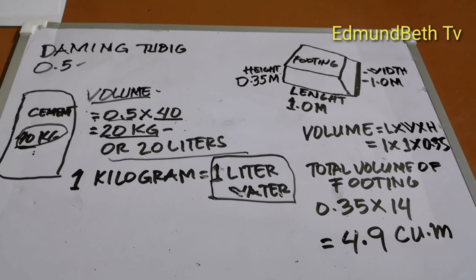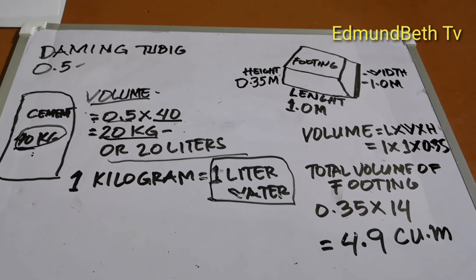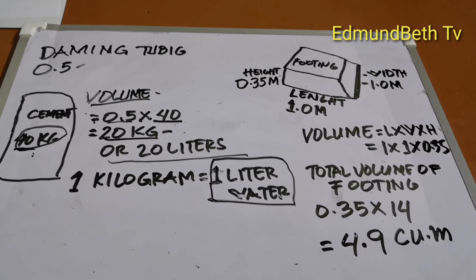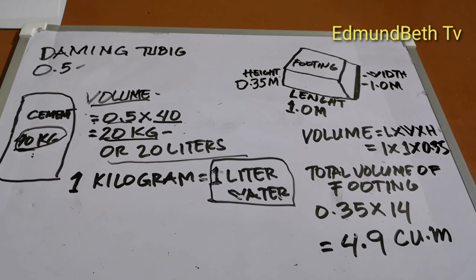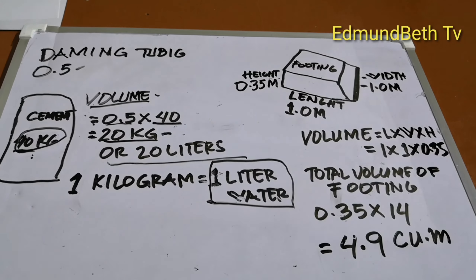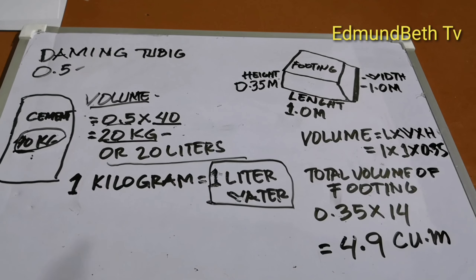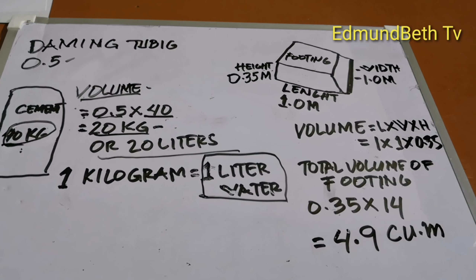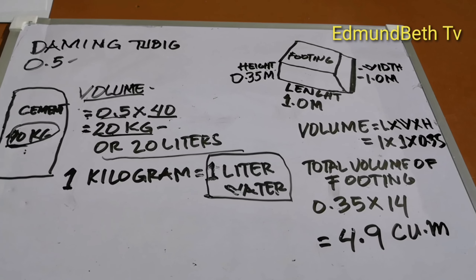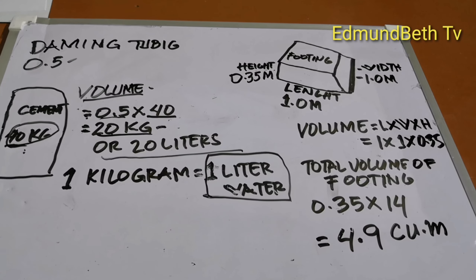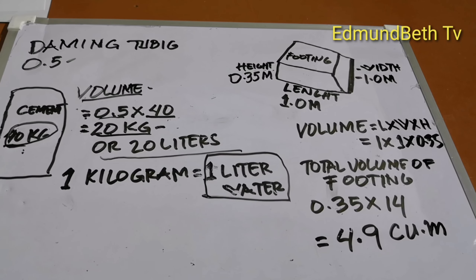Sa 1 kg equals 1 liter na tubig. Kaya 20 kg ng tubig ay katumbas ng 20 liters. Ngayon mga idol, alam na po natin kung ilang sako ng simento, graba, buhangin at tubig sa isang sako ng simento.